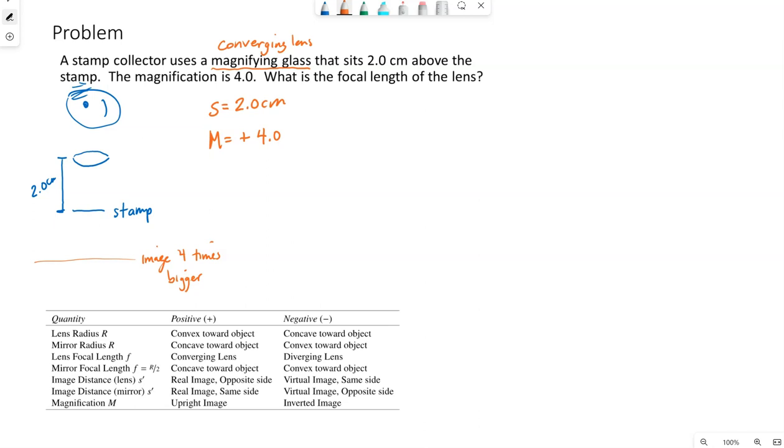I know magnification is negative S prime over S. And they've given us S. So S prime will be four times S. So S prime, oh, I forgot my negative sign, S prime will be negative eight centimeters.